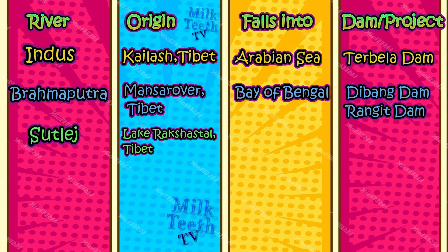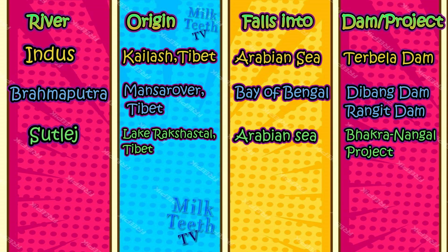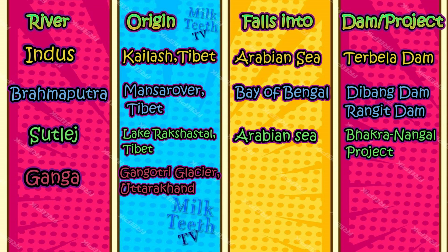Satlaj River: it originates from Lake Rakshastal in Tibet, falls into the Arabian Sea, and has the Bhakra Nangal Dam project constructed over it. River Ganga originates from the Gangotri Glacier in Uttarakhand, India, and it falls into the Bay of Bengal.